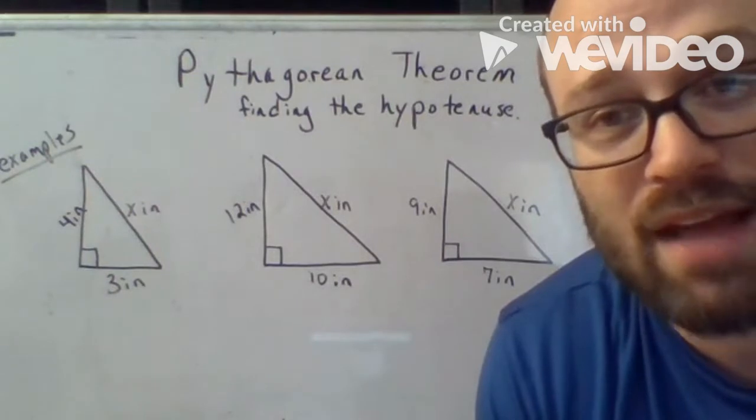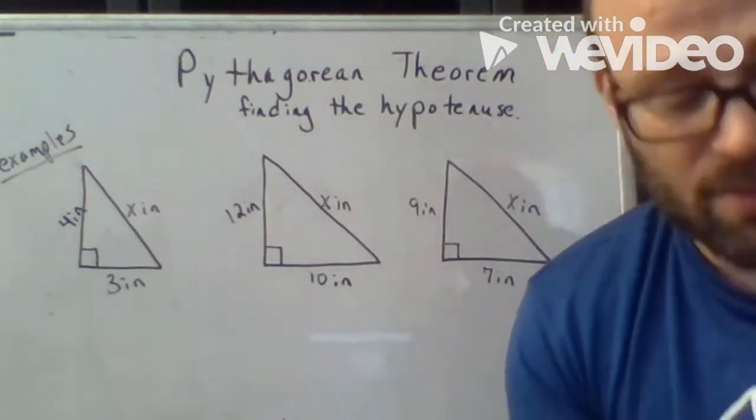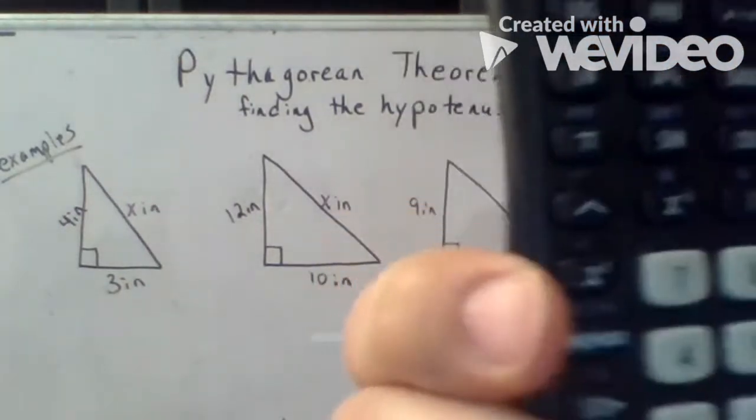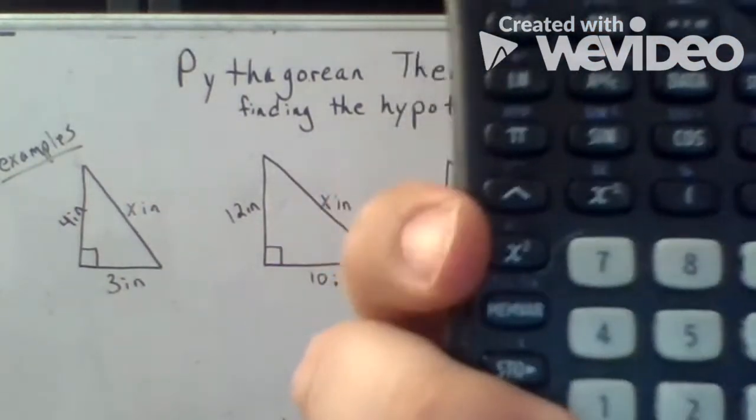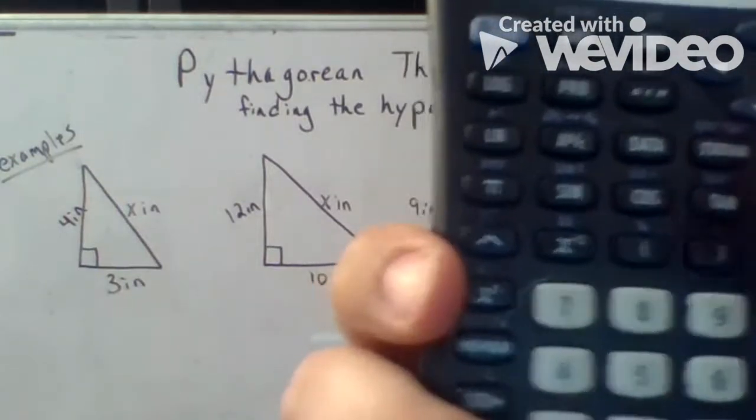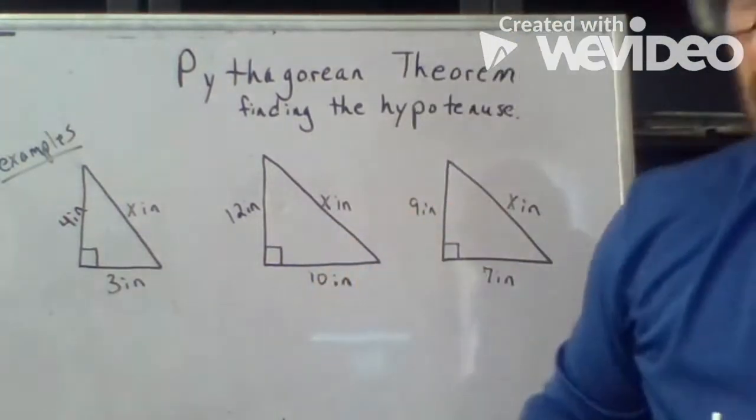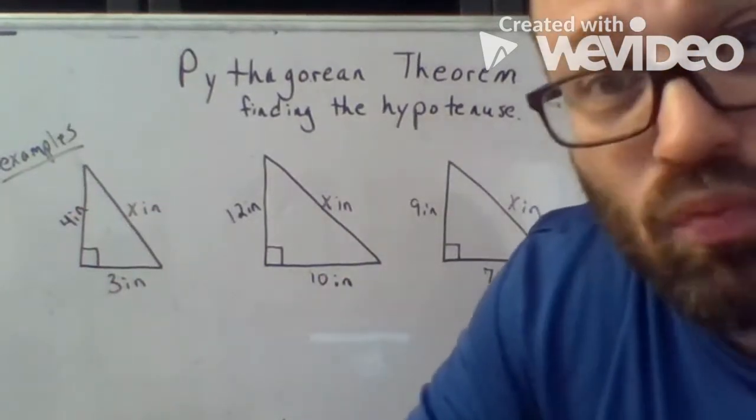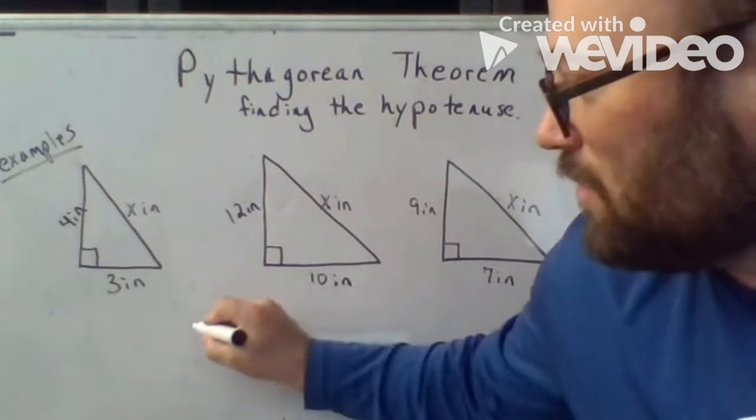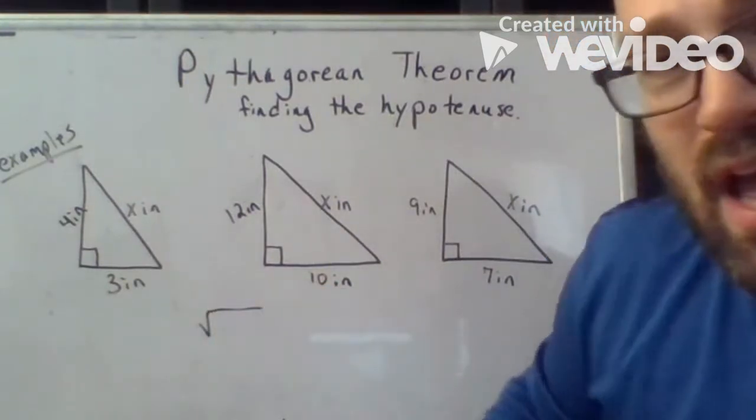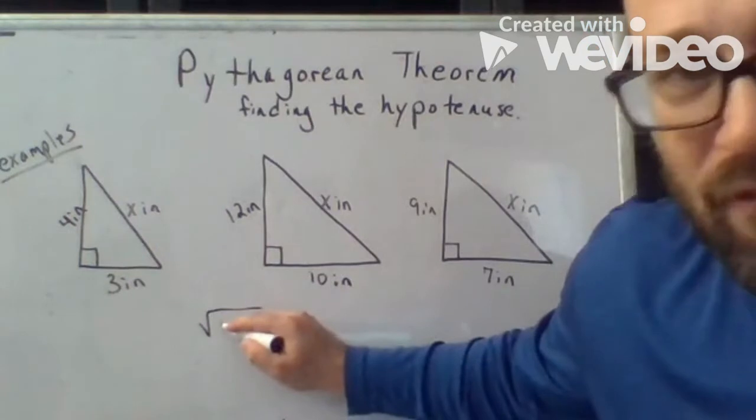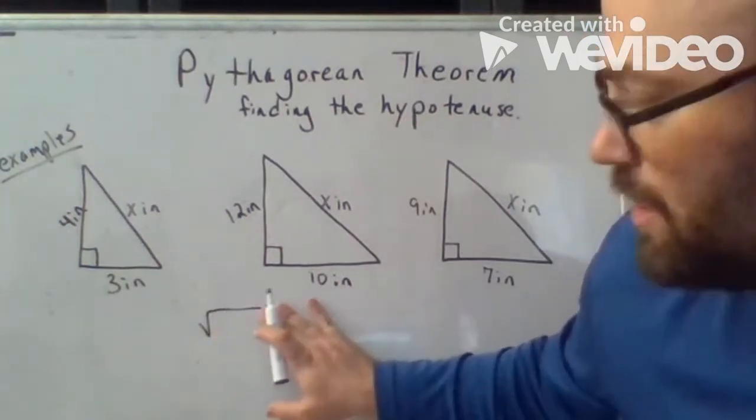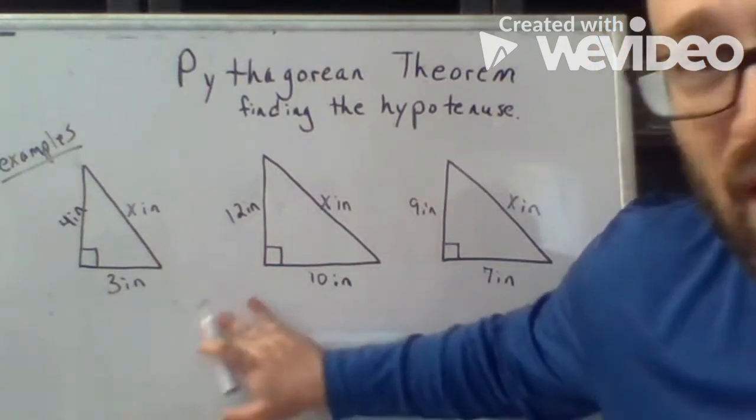So the main button you're going to need to be using is this X squared button. You'll need to use the second button and then the X squared button. There is a thing behind it, it's a square root, it's called a radical. And so we're going to use that to put our amount that we find for our A squared and B squared and we're going to put that information inside here and then we're going to find out what square root is.